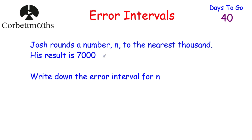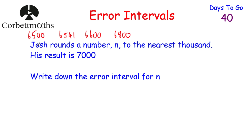In terms of N, it could be 7,000 — when you round that to the nearest thousand, that would be 7,000. But it could also be numbers below 7,000: it could be 6,800, 6,600, 6,541, or even 6,500 — all of those round to 7,000 to the nearest thousand. That's the lowest possible number it could have been, because anything below 6,500 would round down to 6,000. So N has to be bigger than or equal to 6,500.